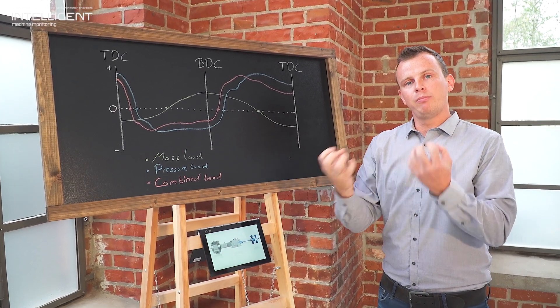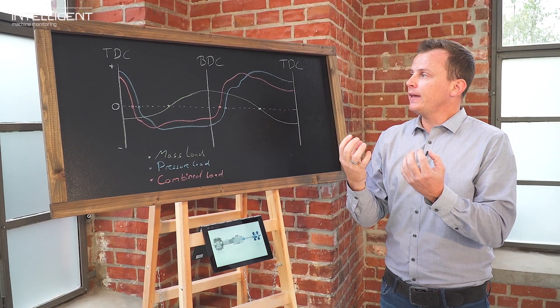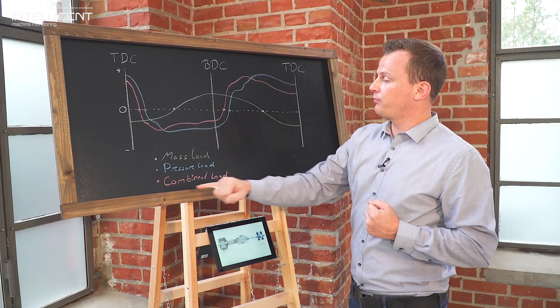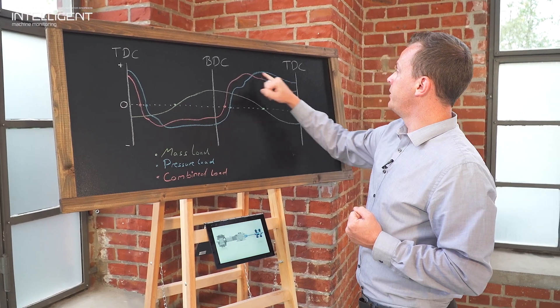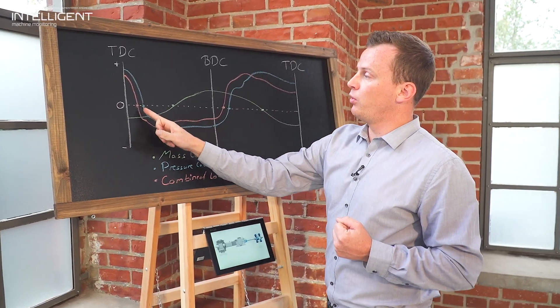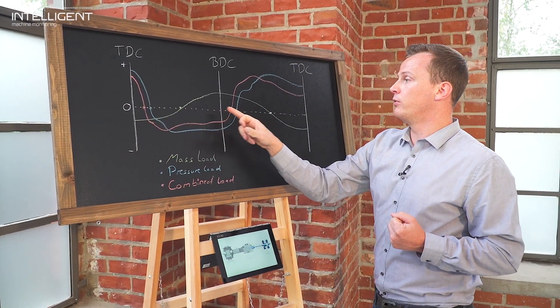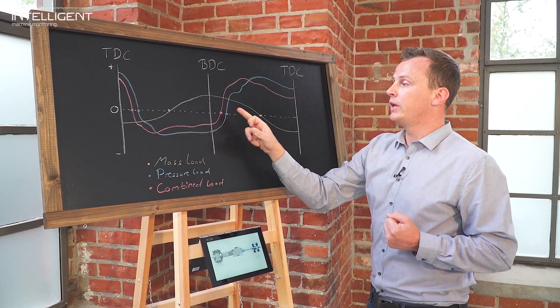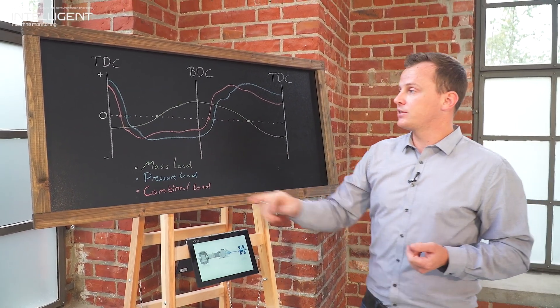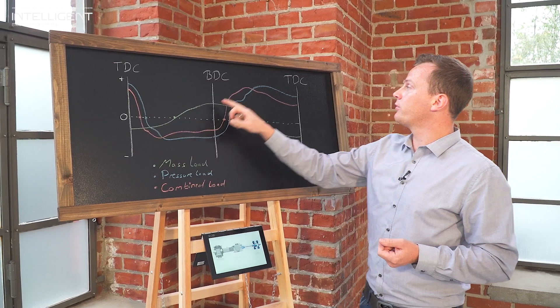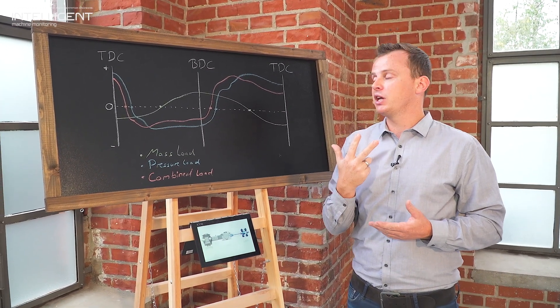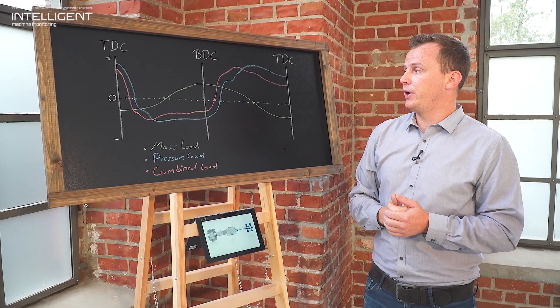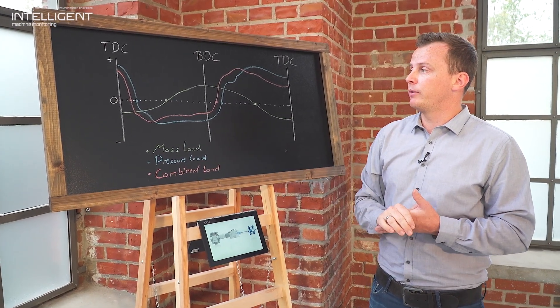So we have to combine these two forces and the combination of both forces will be the red one here shown in this way. The most important points are the rod load reversal points which are here and here, and additionally it's nice to know where is our minimum force and where is our maximum force. Because we have mainly three things we can build up out of this picture. Let's look only to the red one.